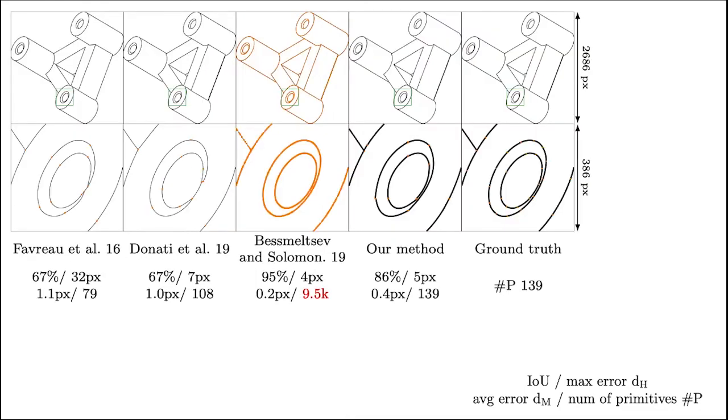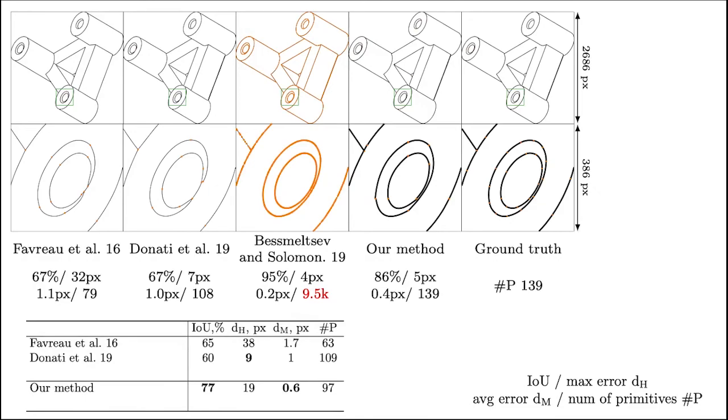Here we show the results on a mechanical drawing. On mechanical drawings with smooth curves, our method outperforms the methods of Favreau et al. and Donati et al. Our method without the final merging step also outperforms the method of Besmeltsev and Solomon, while still producing significantly less primitives. Furthermore, our method correctly estimates the width of the lines, while the prior work only produces the skeleton structure.